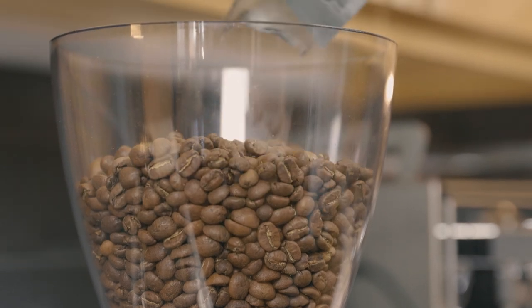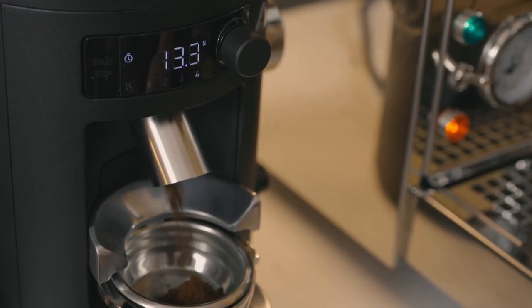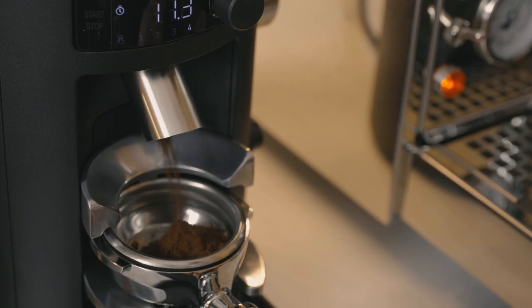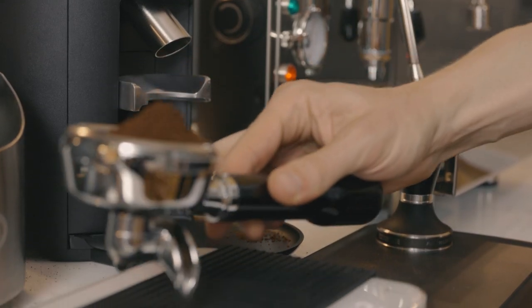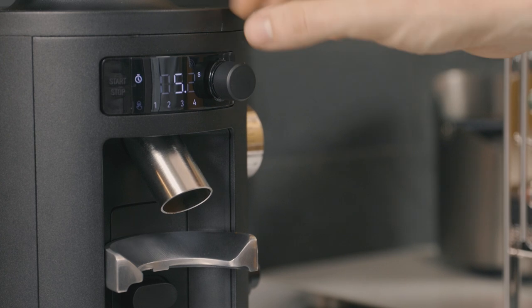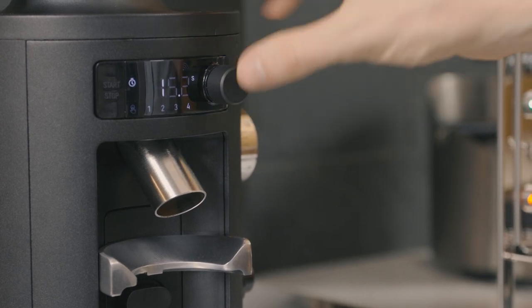To set the timed dosing feature, use a scale to check the weight dispensed in the determined time. Adjust time as needed to dispense your desired dose by using the dial near the screen.